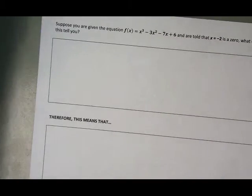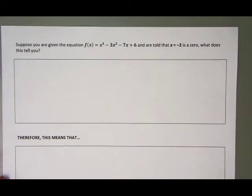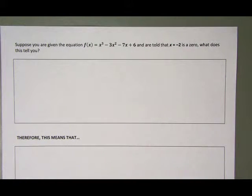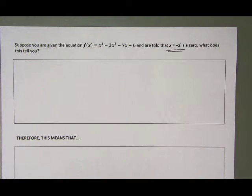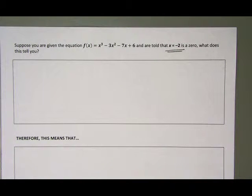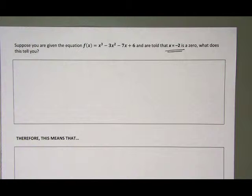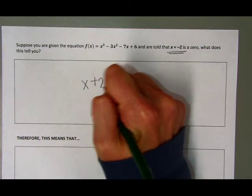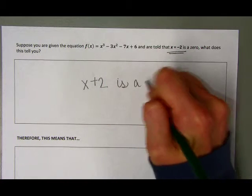On our next page, suppose we're given the cubic function x cubed minus 3x squared minus 7x plus 6. We're told right off the bat that x equals negative 2 is a zero. What does this tell us? Just like we talked about on the previous page, we know that if x equals negative 2 is a zero in our polynomial function, then x plus 2 is a factor.